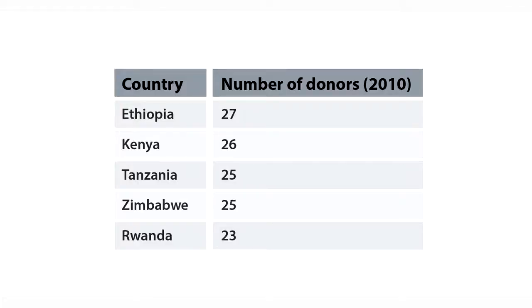One of the major problems has been the multiplicity of donor organisations. In the area of HIV/AIDS alone, Ethiopia has 27 donor organisations in that area of health, Kenya 26, Tanzania 25, Zimbabwe 25, and Rwanda 23 — a whole crowded field. This imposes a huge burden on countries because they have to coordinate and liaise with all of these donors, maintain separate reporting systems, and the under-resourced health ministries crumble under the pressure. There is therefore a great need for harmonisation among donors.